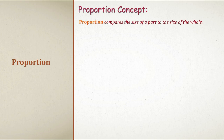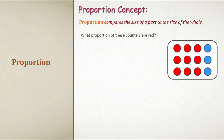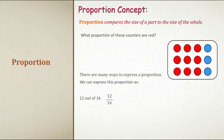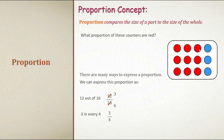What is proportion? Proportion compares the size of a part to the size of the whole. For example: what proportion of counters are red? There are 9 red counters and 3 blue counters. In another example, 12 out of 16 counters are red, giving proportion 12 by 16. Reduced by dividing by 4, it gives 3 by 4, meaning that in every 4 counters, 3 are red. In each row there are 4 counters of which 3 are red.